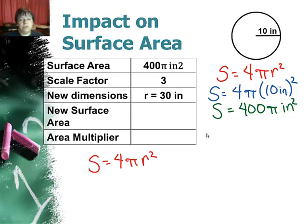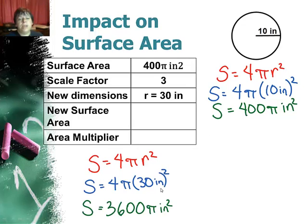So let's find the new surface area. And I have 4 times π times radius squared. Finally I have 3600π inches squared. And you can see that is 9 times bigger. So 9 times bigger for the surface area of a sphere when I triple all dimensions.